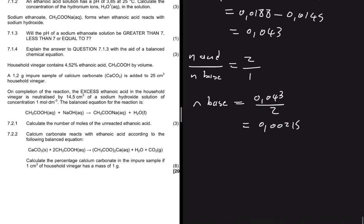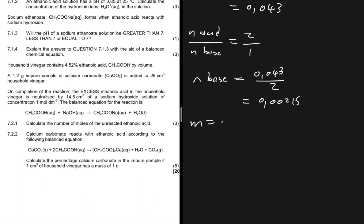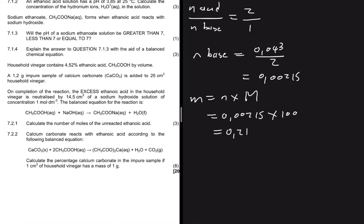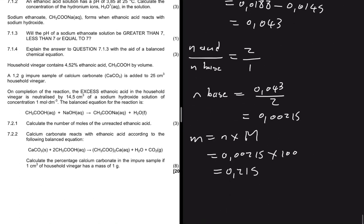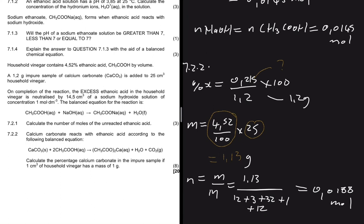The mass of pure CaCO₃ = moles × molar mass = 0.00215 × 100 = 0.215 g. Now we can apply the percentage purity formula: % CaCO₃ = (0.215 ÷ 1.2) × 100 ≈ 18.08%.